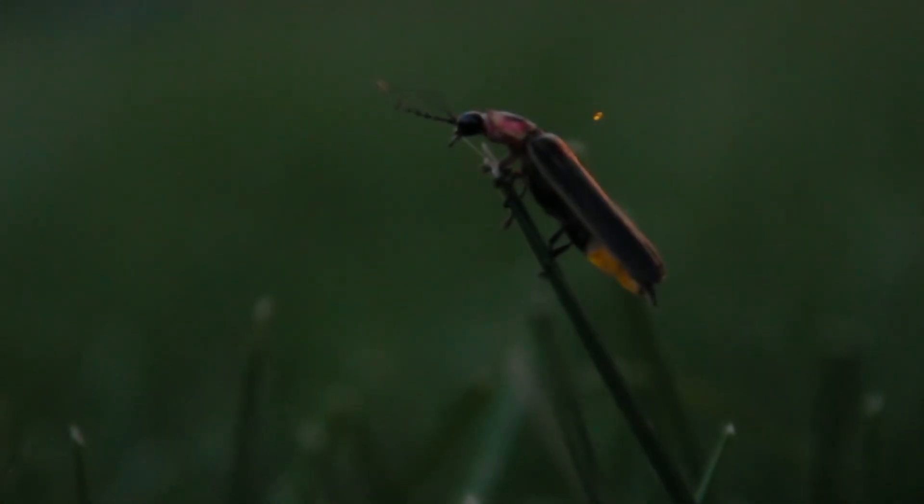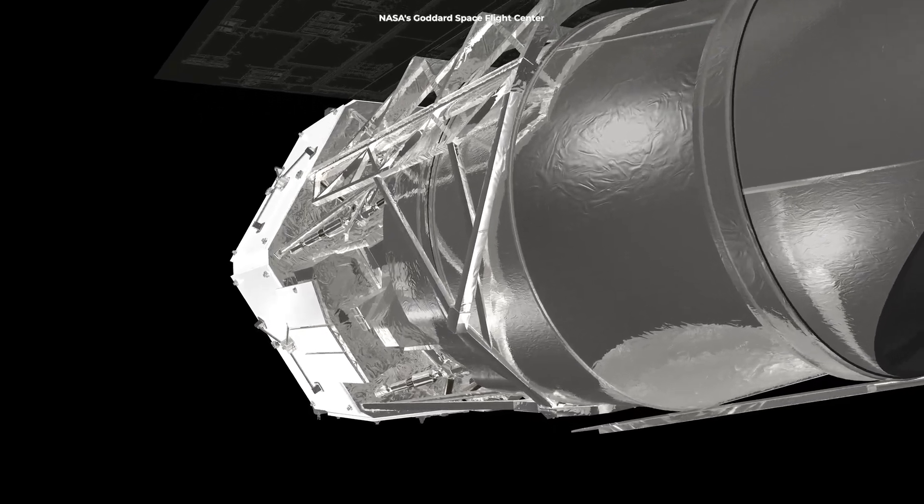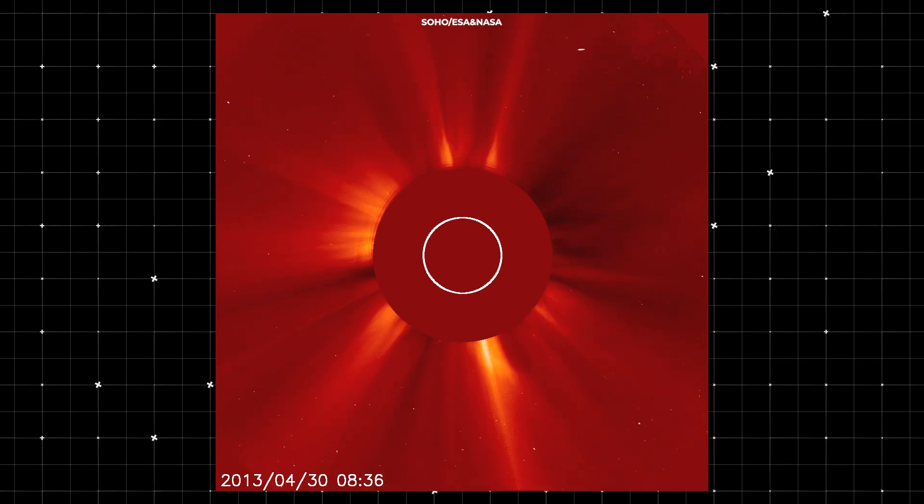Remember that firefly next to a spotlight? Well, this is where the magic happens with something called a coronagraph. Now, coronagraphs aren't new. Astronomers have been using them for decades to study the sun's corona.